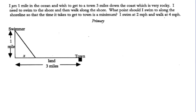We have a situation where we have a swimmer who is one mile out in the ocean and wishes to get to town three miles down the coast, which is very rocky. He needs to swim to the shore and then walk along the shore. What point should I swim to along the shoreline so the time it takes to get to town is at a minimum? I swim at two miles per hour and walk at four miles per hour. We are trying to minimize the time.